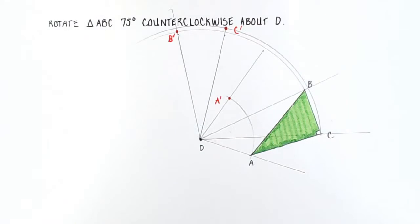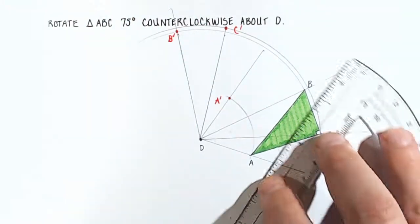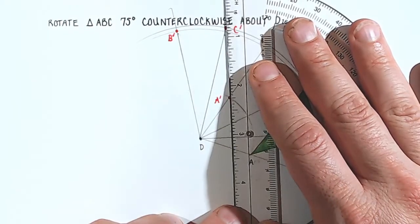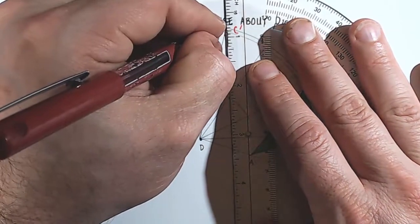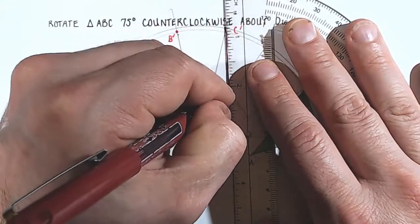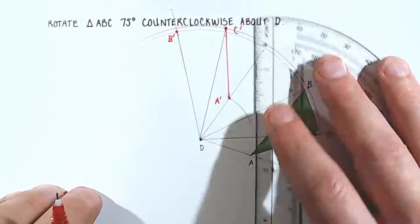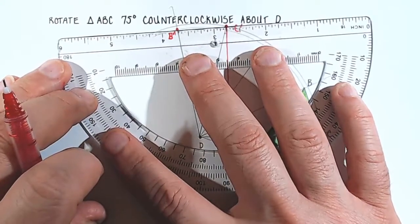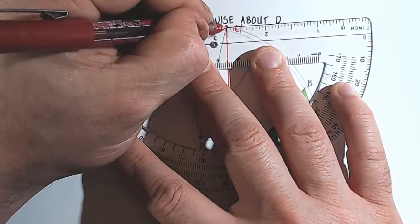Okay, and now what I can do is connect all these dots. Each dot was rotated 75 degrees, so that means the whole figure was rotated 75 degrees. Okay. Then we'll color it in, because that's the fun part.